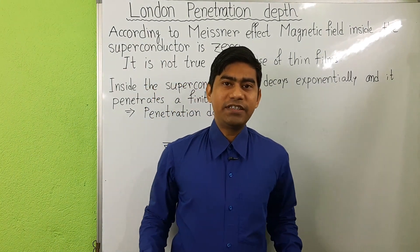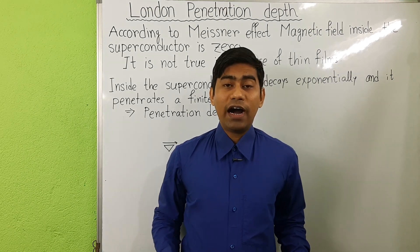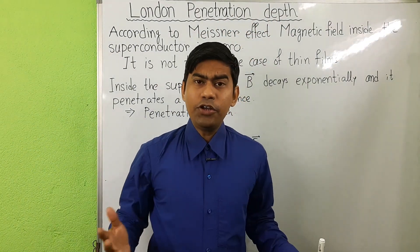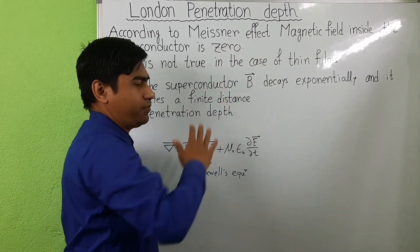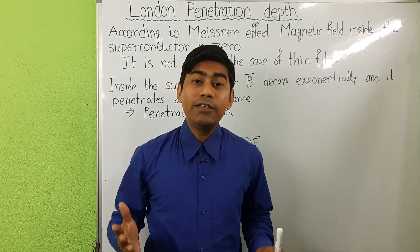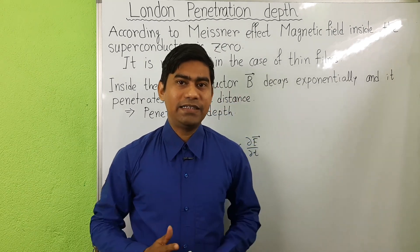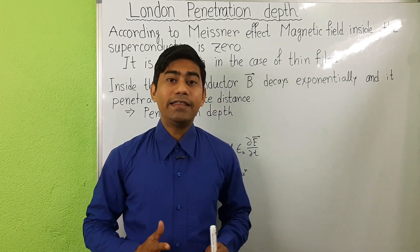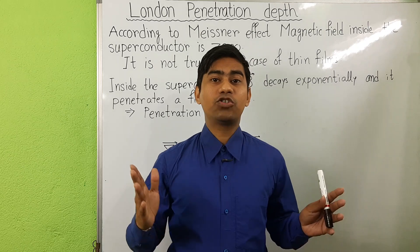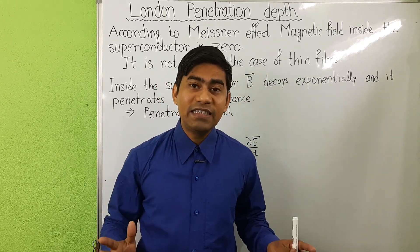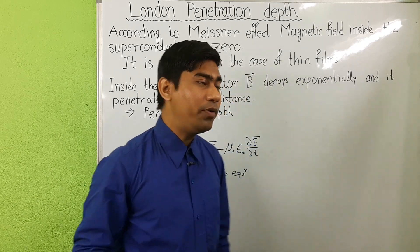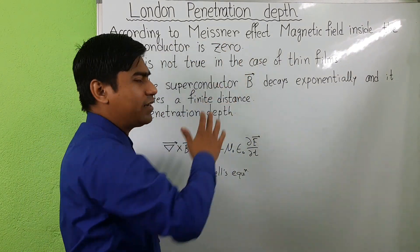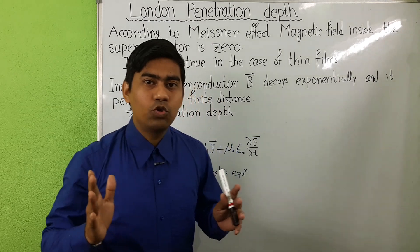Hello everyone, welcome to this lecture. I am Amlan Das and I am going to discuss London penetration depth. We know what the Meissner effect is: when a superconductor is cooled below its critical temperature and placed in an external magnetic field, it is observed that the magnetic flux or magnetic lines of force are expelled from inside the superconductor. This phenomenon is known as the Meissner effect.